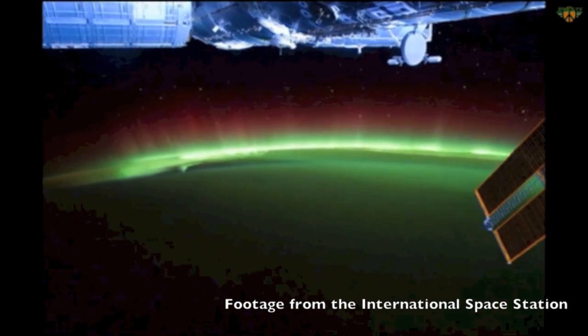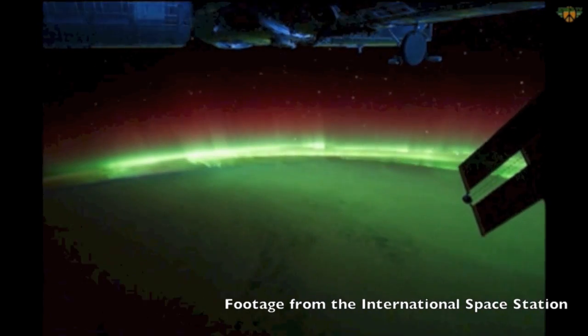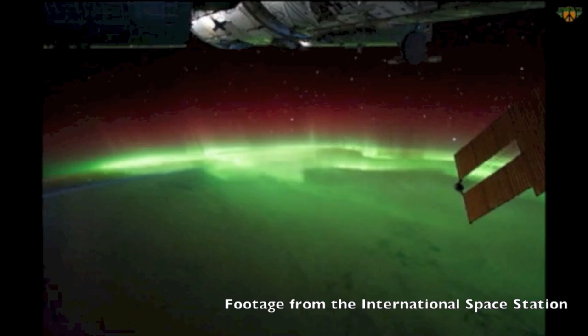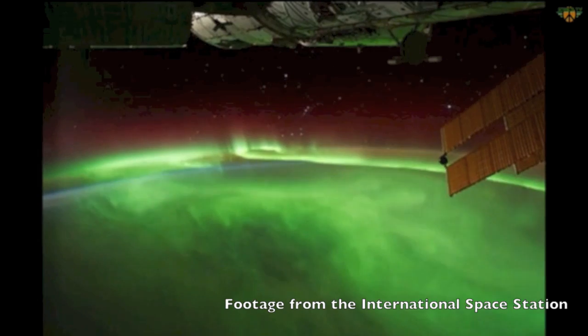It is the solar wind interacting with Earth's upper atmosphere that creates the auroras. The ions in the solar wind hitting oxygen and nitrogen and the exchange of energy between them create these beautiful displays.